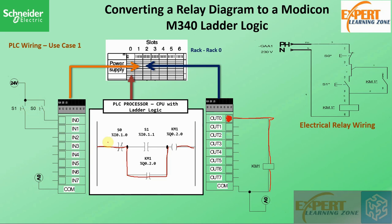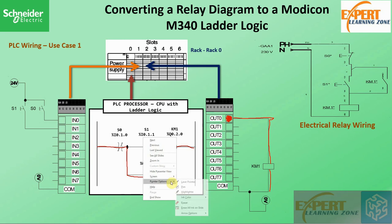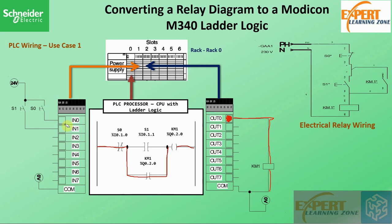When I press S0 — and remember this is normally closed — then this contact opens. While this switch is pressed and this contact opens, this line is broken. When this line is broken, current ceases flowing to the output. Our circuit is no longer complete, the circuit breaks open, and the coil is de-energized, so the system goes off.